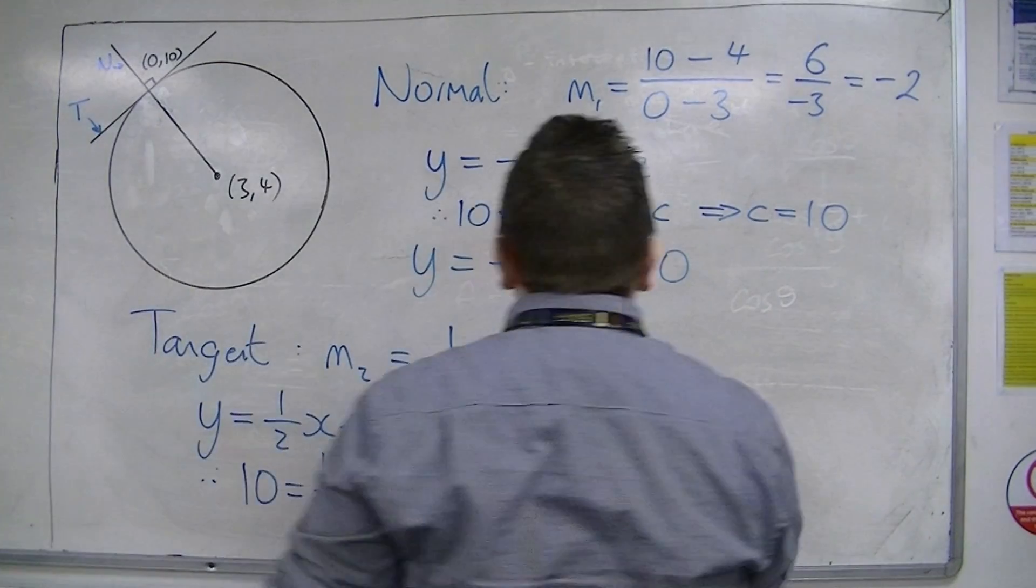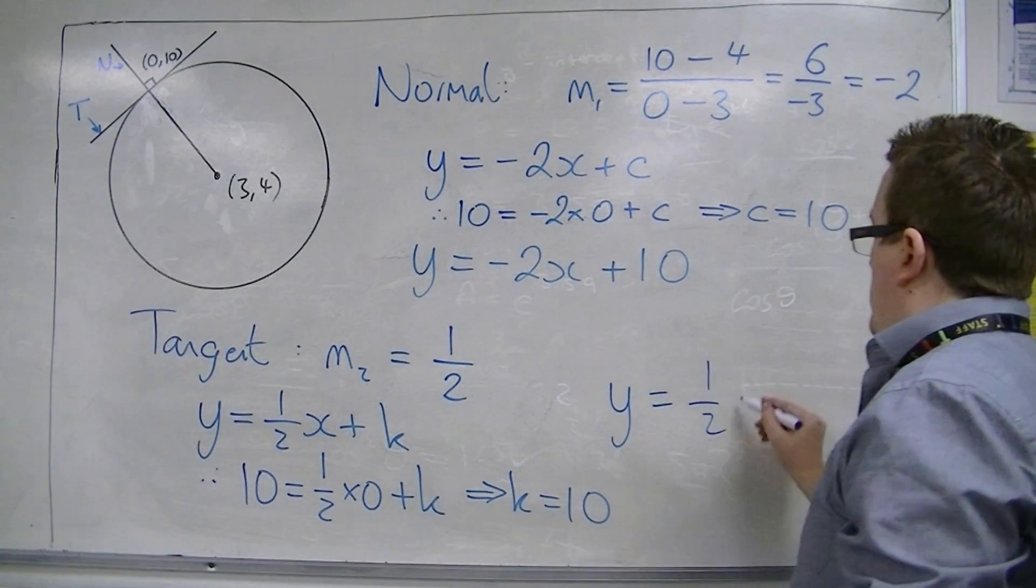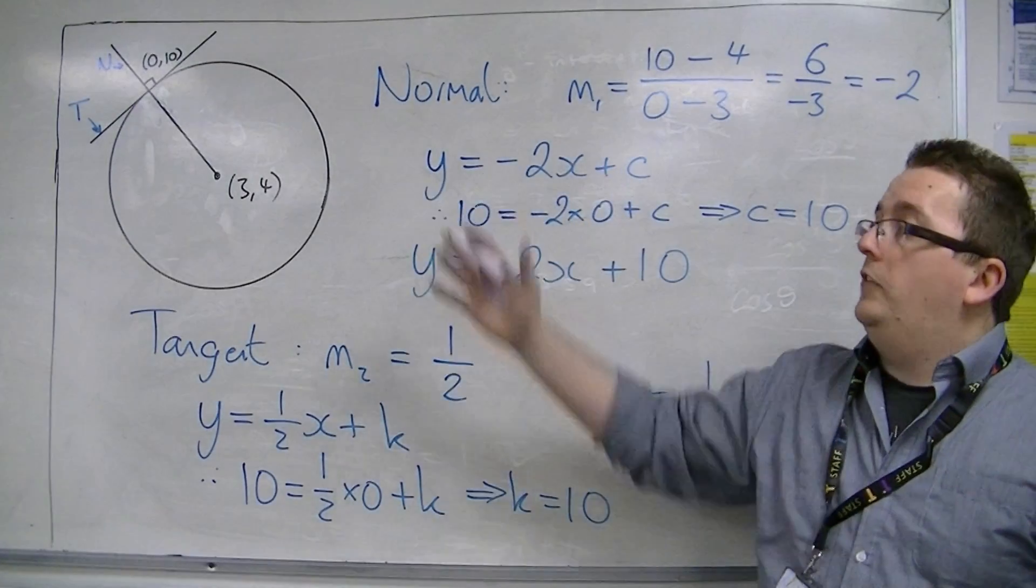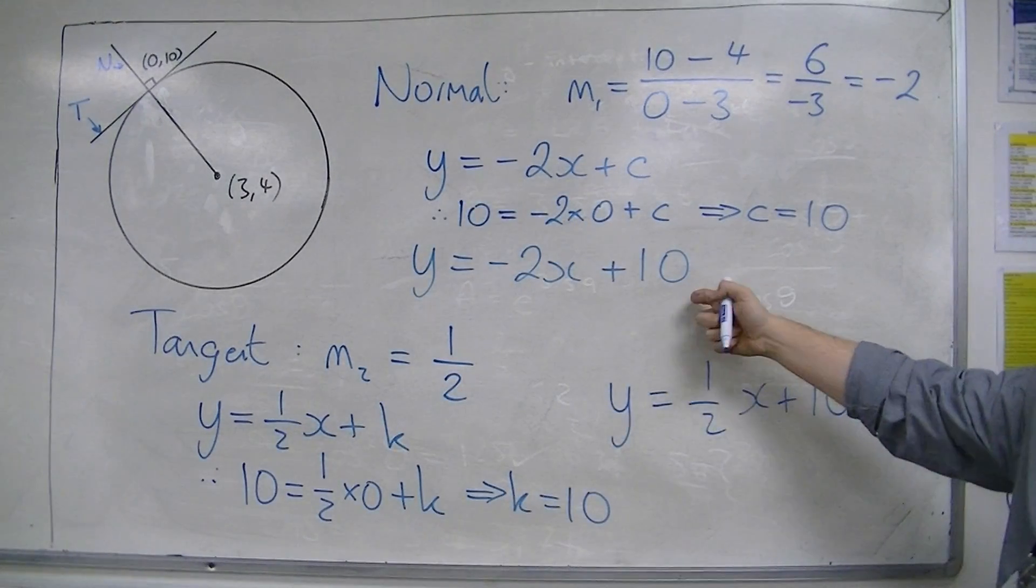So, the equation of the tangent is y is equal to 1 half x plus 10. And we should have been able to spot that already, because (0, 10) is on the y-axis, as it was here.